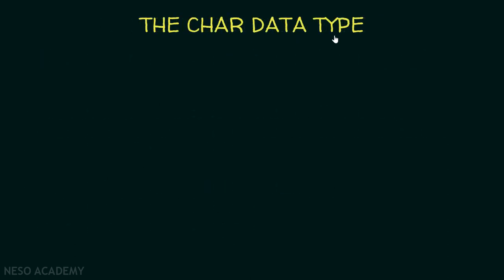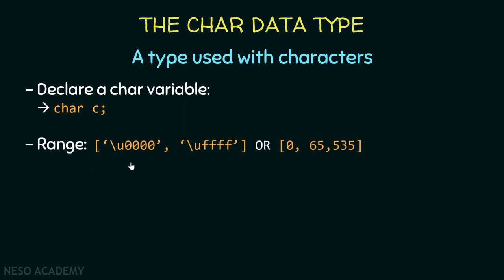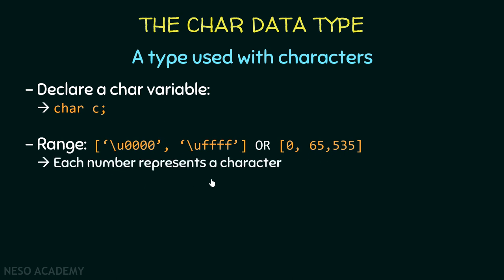Now let's talk about the char data type. It is a type used with characters. To declare a char variable, we use the char keyword and name the variable c. Let's see the range of characters — this interval is the range of characters in Java. Here we are using Unicode representation, and here we are using numbers. Each number represents a character. We also have characters inside single quotes with backslash u followed by four hexadecimal numbers.